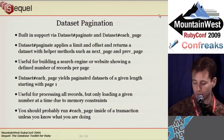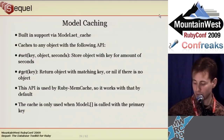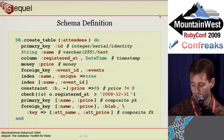Sequel has built-in pagination support — really just a wrapper around limit that adds a few methods. It's helpful if you're writing a search engine. Each_page yields a paginated version of the current dataset a page at a time, and can be useful to process a record set that won't fit in memory. Sequel's built-in caching supports caching any model object with an API that's the same as Ruby memcache.